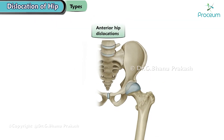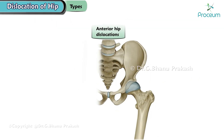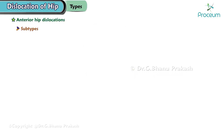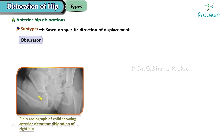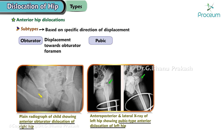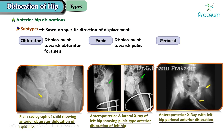The first type is anterior hip dislocations, where the femoral head is displaced forward. Within this category, there are different subtypes based on the specific direction of displacement: obturator dislocations involve displacement towards the obturator foramen, pubic dislocations involve displacement towards the pubis, and perineal dislocations involve displacement towards the perineum — the area between the anus and scrotum or vulva.